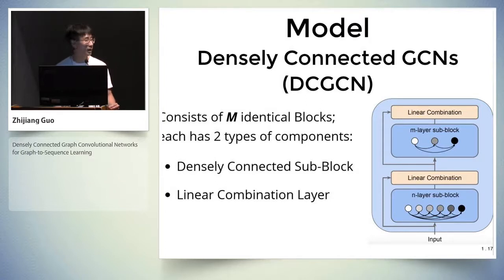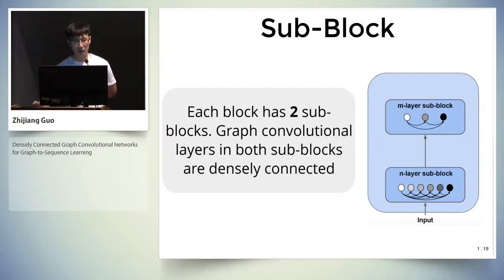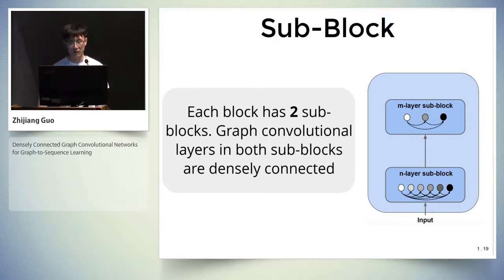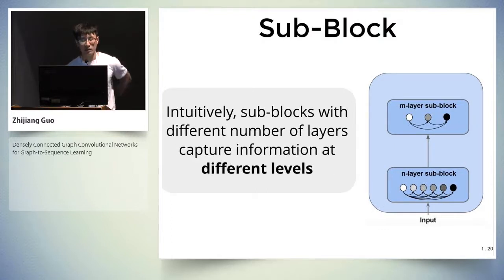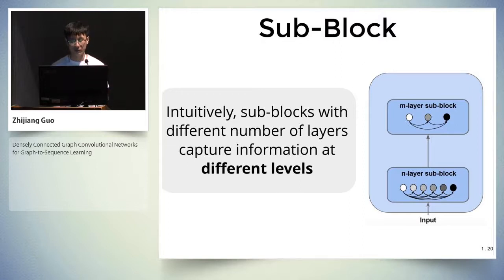Our proposed model consists of m identical blocks, and each block has two types of components: densely connected sub-blocks and a linear combination layer. Each DC-GCN block has two sub-blocks, and graph convolutional layers in both sub-blocks are densely connected. Intuitively, sub-blocks with different numbers of layers are able to capture information at different levels, similar to different filter sizes in convolutional neural networks. The number of layers in both sub-blocks are different — the first sub-block has n layers, while the second sub-block has m layers, where m and n are hyperparameters.